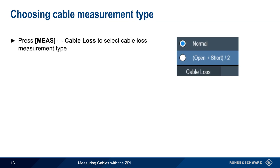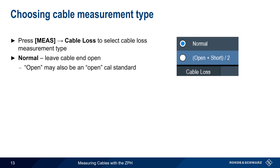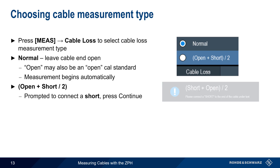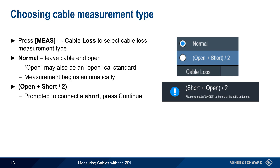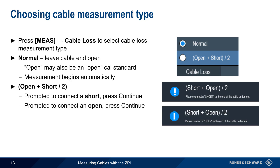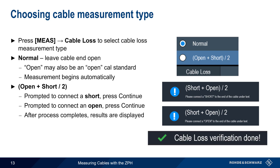The next step is choosing the cable measurement or termination type by pressing the Measure Hard key and then Cable Loss. In normal measurement, the end of the cable is left open or un-terminated. Note that an open may be created by attaching an open calibration standard. This type of cable loss measurement begins automatically. If instead we choose open plus short divided by 2, the cable will be measured twice – once with a short and once with an open. Attach a short when prompted and press Continue, and then when prompted leave the cable open or connect an open, and press Continue again. After the process is completed, the cable loss results will be displayed.